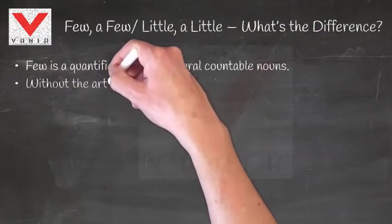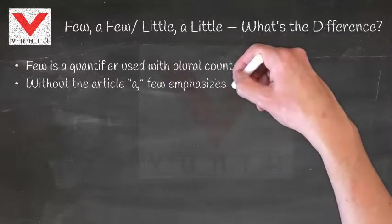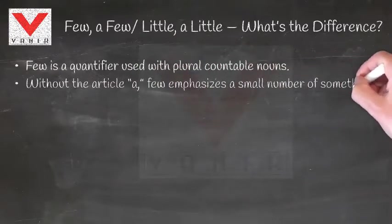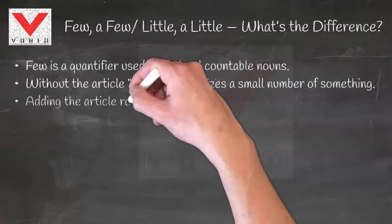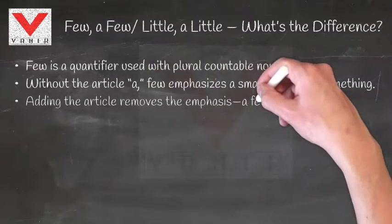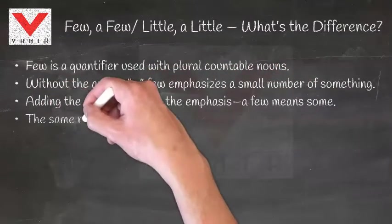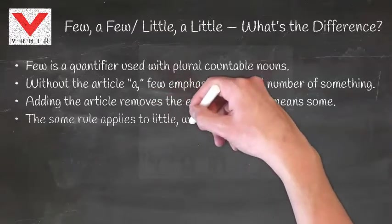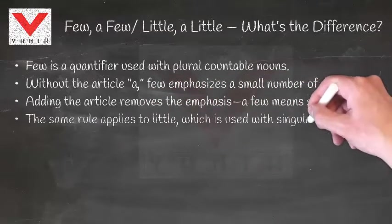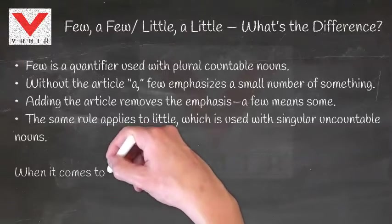Few is a quantifier used with plural countable nouns. Without the article 'a', few emphasizes a small number of something. Adding the article removes the emphasis - a few means some. The same rule applies to little, which is used with singular uncountable nouns.